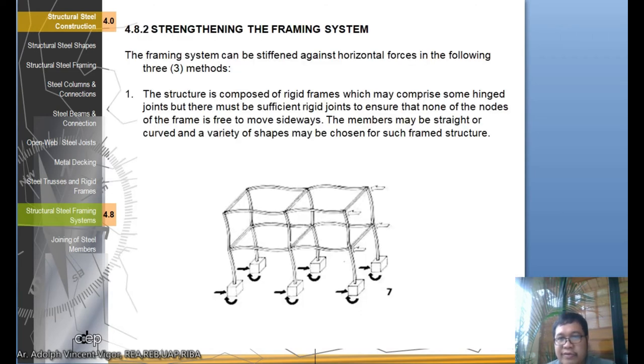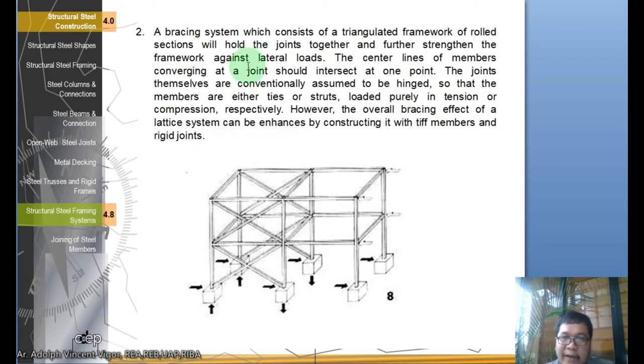How to strengthen the framing system? The framing system can be stiffened against horizontal forces in the following three methods. First, the structure is composed of rigid frames which may comprise some hinge joints, but there must be sufficient rigid joints to ensure that none of the nodes of the frame is free to move sideways. The members may be straight or curved, and a variety of shapes may be chosen for such framed structure.